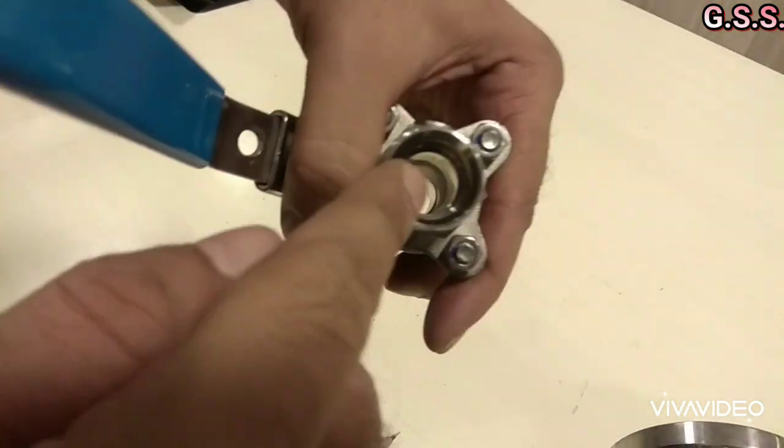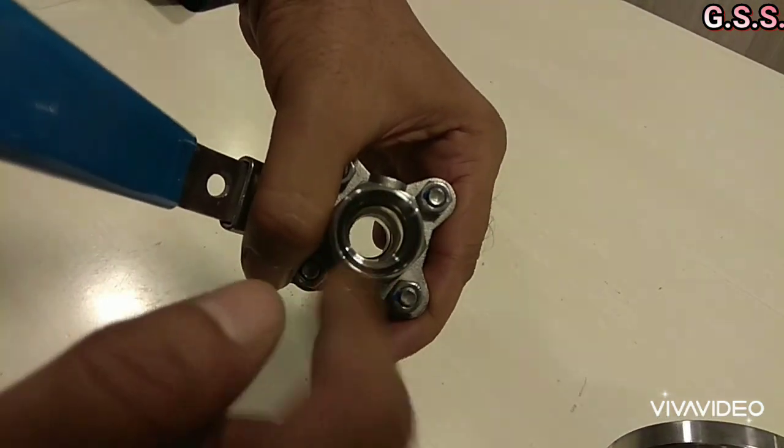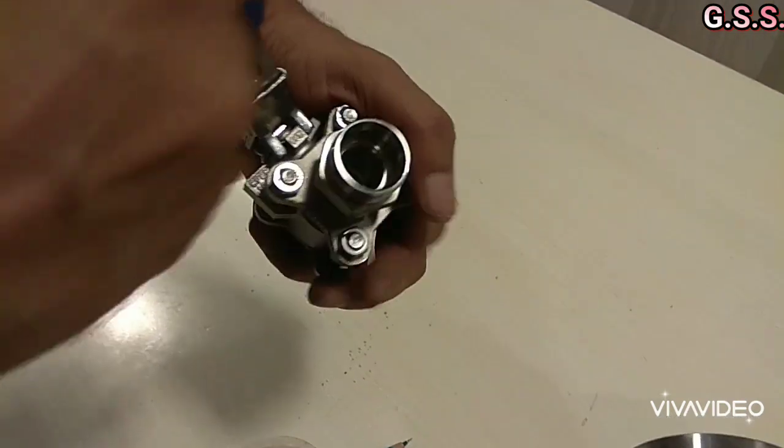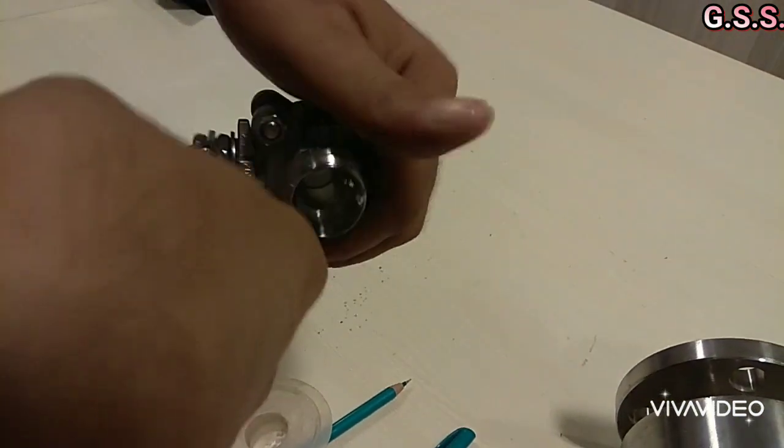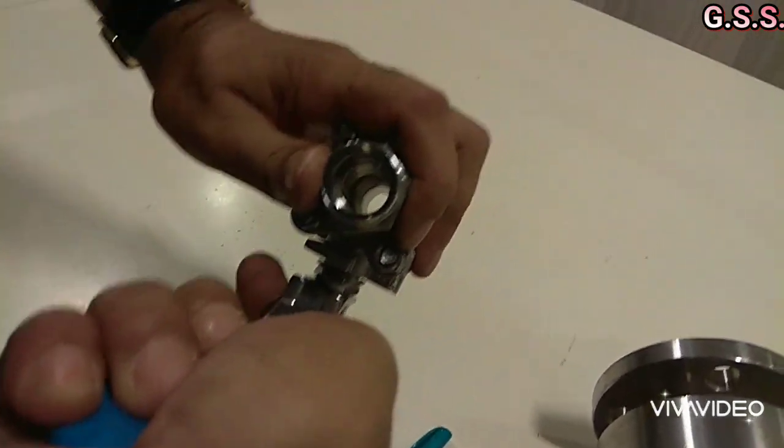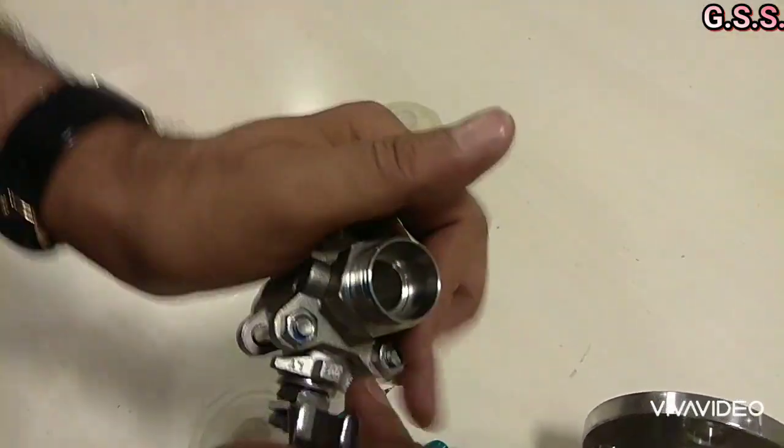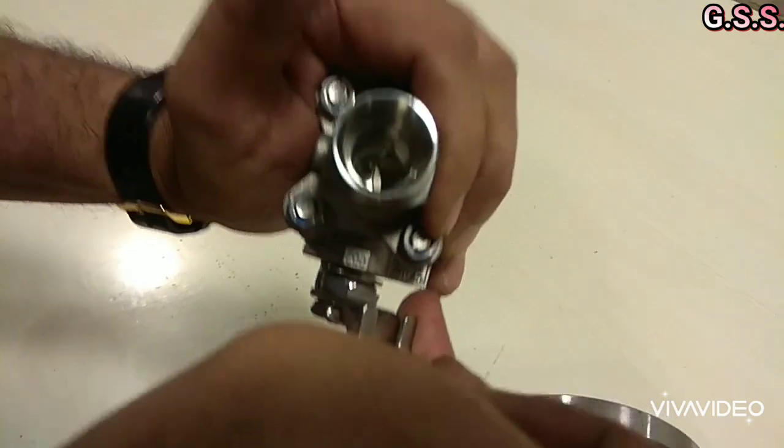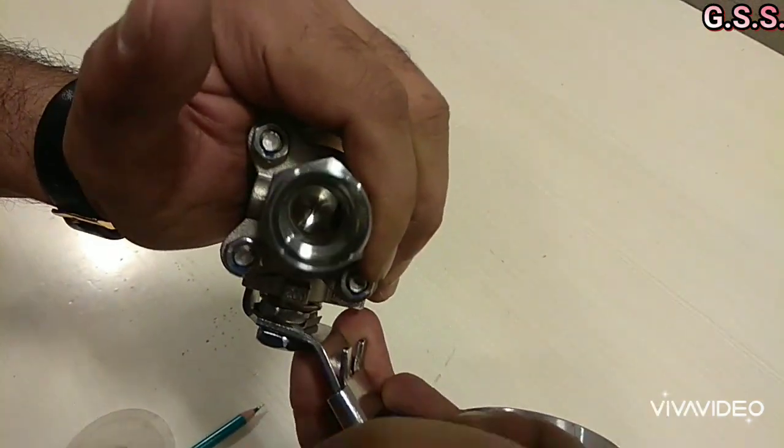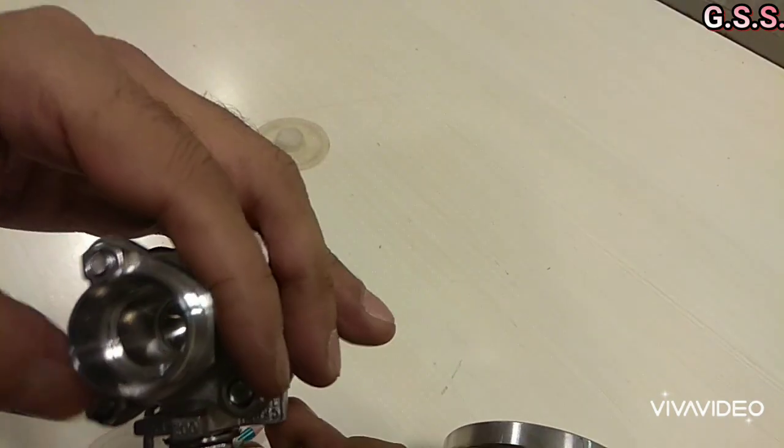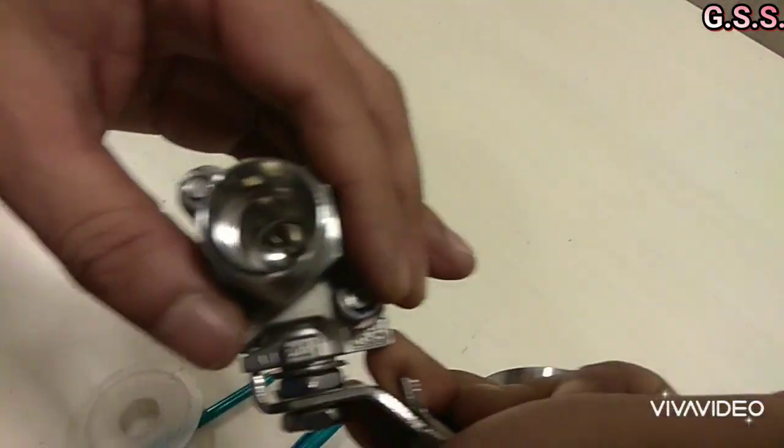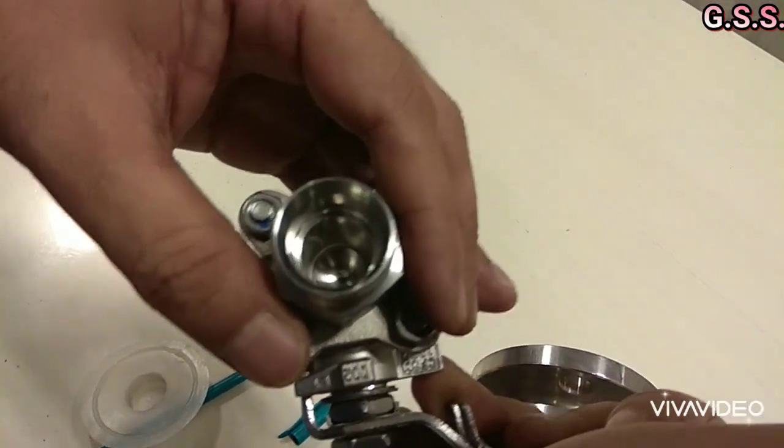And that debris, when the ball will be operated—that means the valve will be opened or closed—that debris or iron particles will be in contact with the ball and will be rubbing with the ball. So after a few months or after a few years, this type of reduced bore ball valve may have leakage.